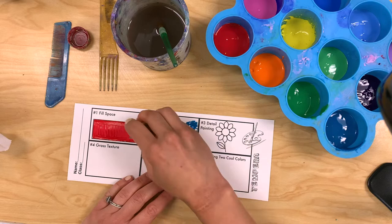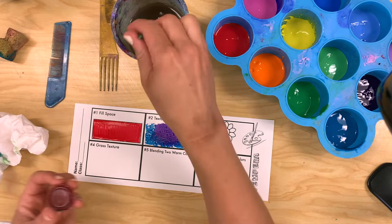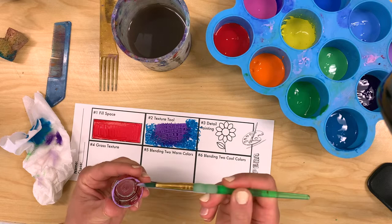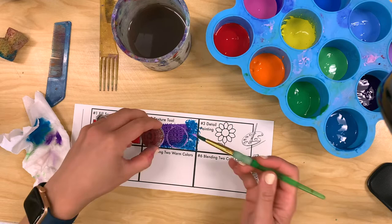So you could use combs, you can use sponges. Here I'm using a sponge just dipping it just a little bit into the paint, or even bottle caps. Here I'll put the paint onto the bottle cap and then stamp it onto my paper.